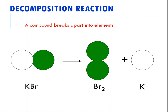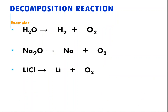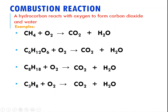The next type is a decomposition reaction — essentially the opposite of synthesis. Using the same reaction, instead of bromine and potassium combining to form potassium bromide, now potassium bromide breaks apart into bromine and potassium. In a decomposition reaction, you will always have a compound breaking apart into the elements that make it up. And again, if it's not balanced, you have to use coefficients. If you see a compound breaking into elements, it's a decomposition reaction.